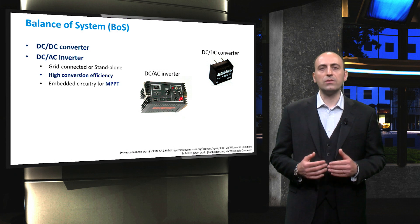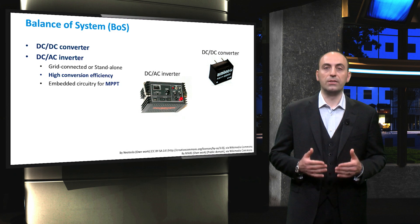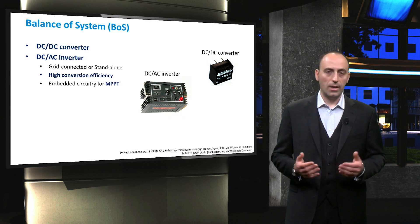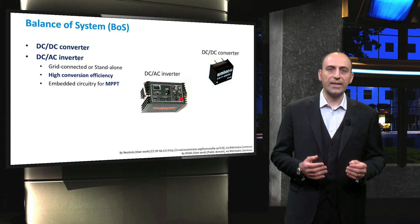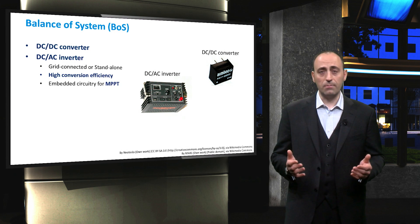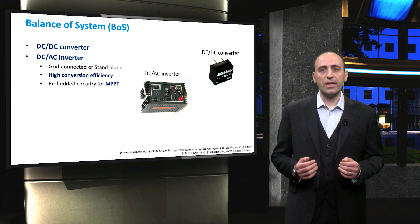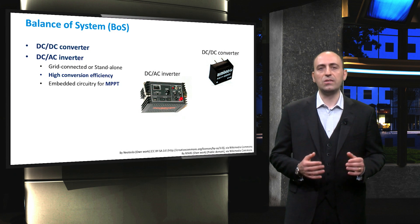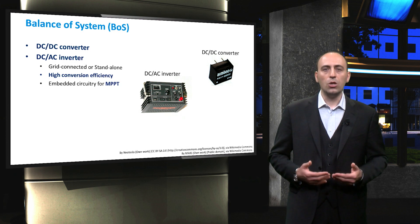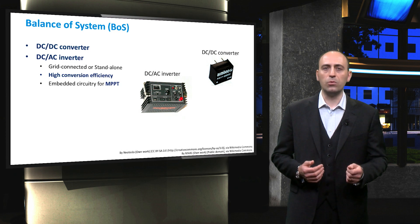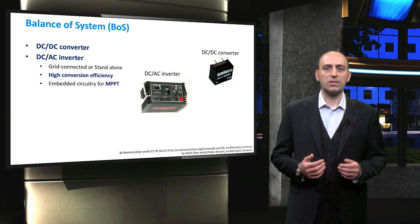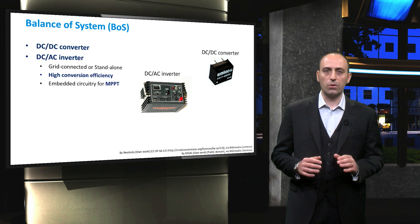Furthermore, inverters can contain an additional board in the circuitry for actuating a maximum power point tracking strategy. As a result, the PV module can operate at the maximum power point voltage. In fact, many inverters have an embedded DC-DC converter to change the variable voltage of the PV array to a constant voltage that is the input for the actual DC-to-AC converter. We will discuss maximum power point tracking in more detail later in this course.